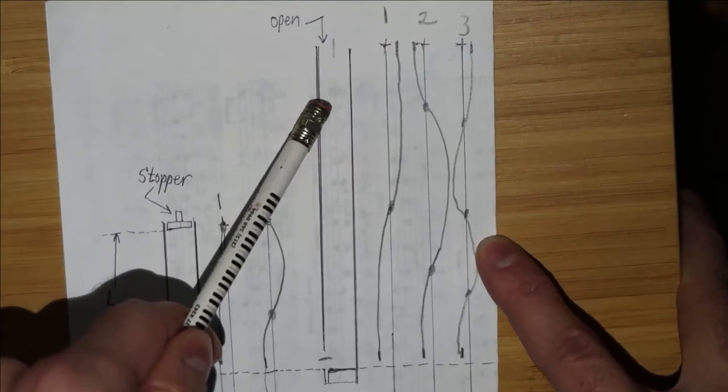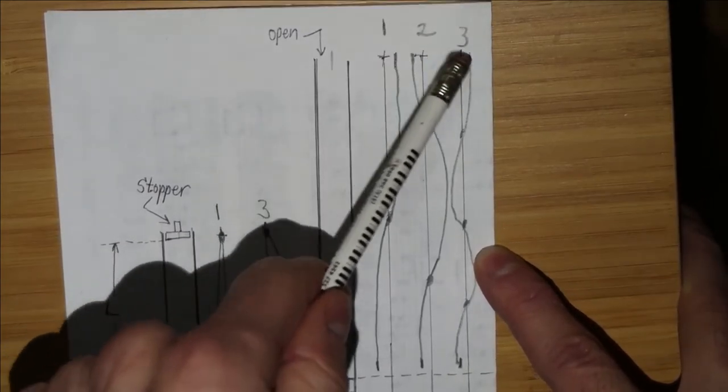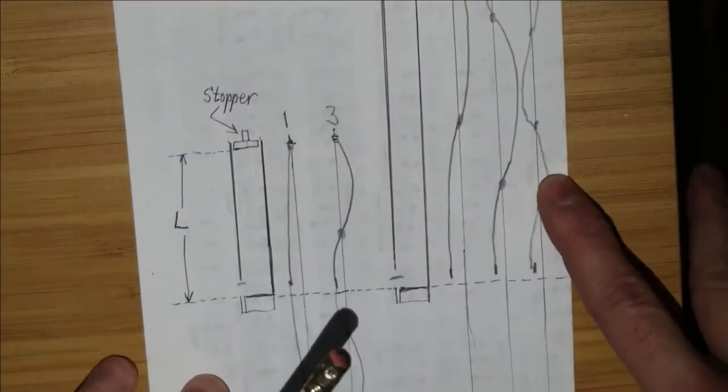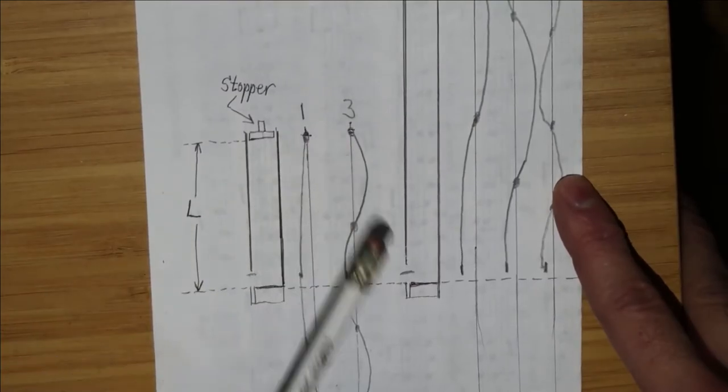Now, so the open pipe can support all harmonics, N, whereas the stoppered pipe can only support odd harmonics.